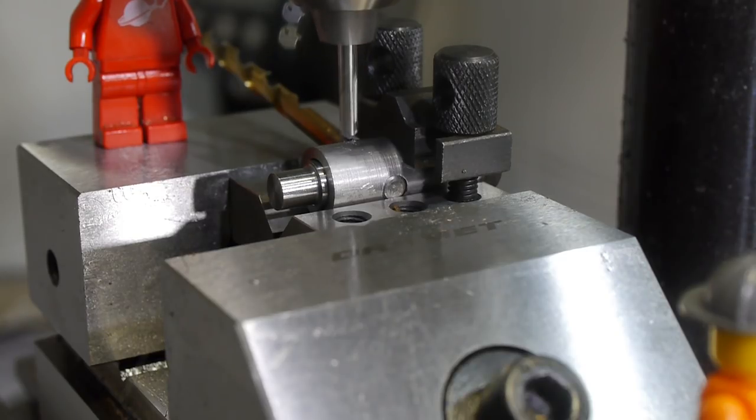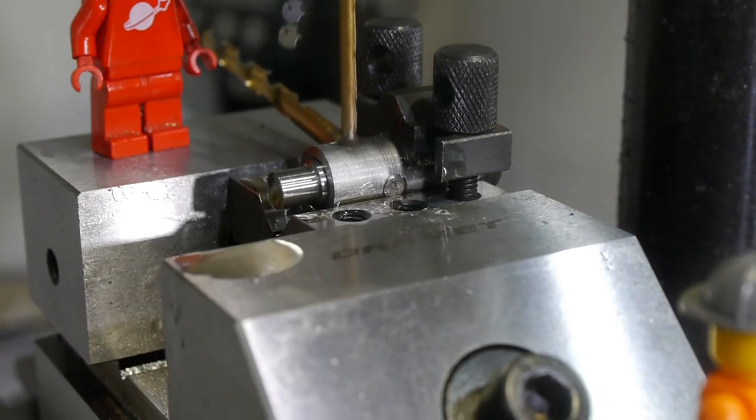To cut the retaining screw hole and slot I switched to this V-block and clamp that I bought specially. The two shaft parts were held in alignment using the shank of the 4mm twist drill that was used to drill them.